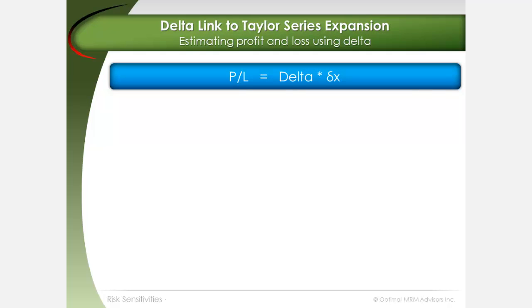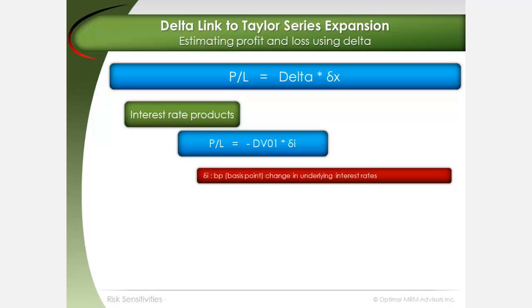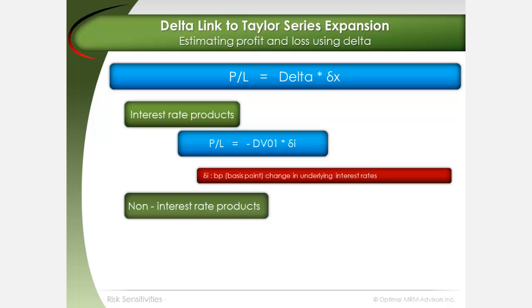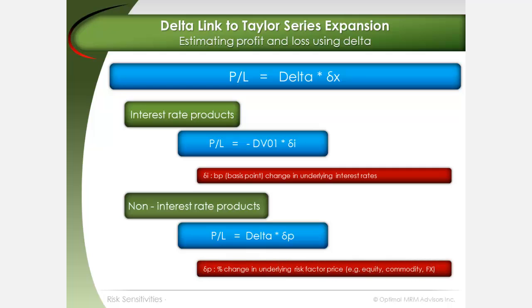Using the first expression of the Taylor series expansion, we start building an investment's profit or loss equation with a delta sensitivity expression. For interest rate products, P&L is equal to negative DV01 times delta I, where delta I represents the change in underlying interest rates expressed in basis points. For non-interest rate products, P&L is equal to delta times delta P, where delta P represents the change in the price of the underlying equity, commodity, or FX risk factor expressed as a percentage change.